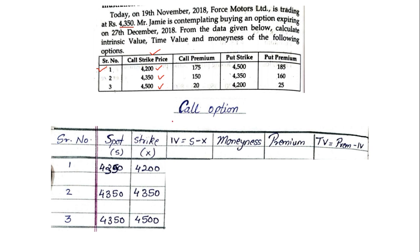In our first condition, spot is 4350 and strike is 4200 — spot is more than strike, so the difference of 150 means IV will be positive 150. Next, 4350 and 4350 are both equal, so IV becomes zero. When your spot is less than your strike it's a loss, so IV will again be zero. The answers are 150, 0, and 0. Under call option, only when your spot price is more than the strike price do you get a gain.